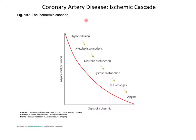The ischemic cascade - this is what's going on both in your symptoms and in the cells. As myocardial perfusion drops because of a critical stenosis, you'll start seeing metabolic alterations in the cells themselves. They'll start to change their metabolism to keep up with the fact they're not getting oxygenated blood. The heart mechanics often change in diastole first - that's the filling part of the heart cycle. It will slow down and get viscous and slower.